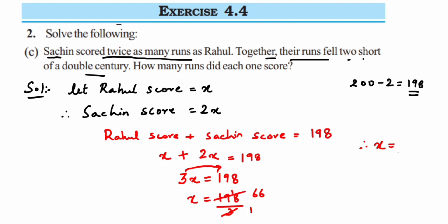But we have assumed that X is nothing but Rahul's score, so therefore Rahul's score will be 66. And Sachin's score will be double of what Rahul has scored, so therefore Sachin's score is equal to 2 into 66, or you can just add 66 plus 66, you will get 132.